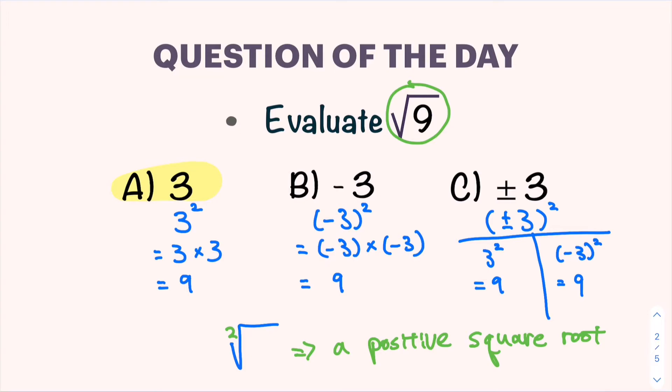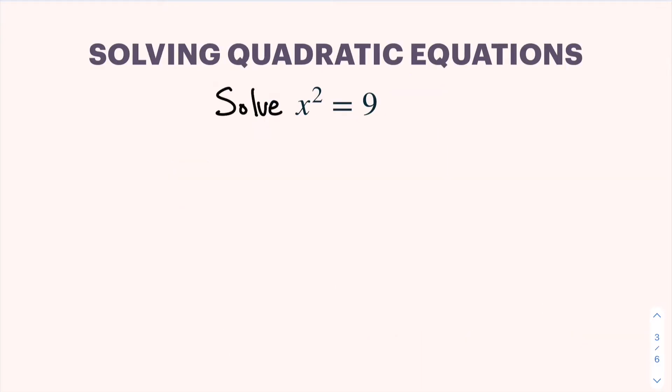Then when do we ever take account of the negative root? Take a look at this example: x squared is equal to 9. The reason that this is a quadratic equation is because our variable has a power of 2. If it had a power of 1, we would call it a linear equation, but when our variable has a power of 2, we call it a quadratic equation.